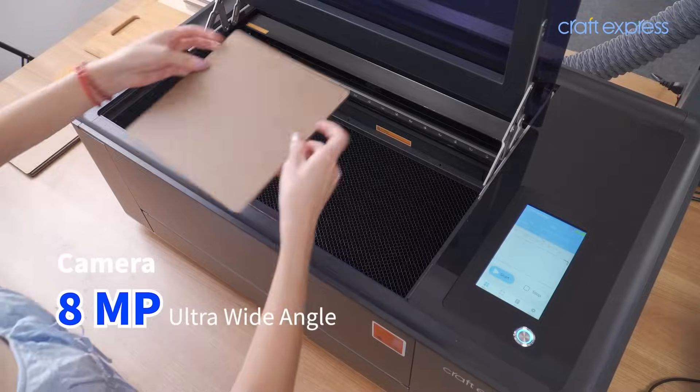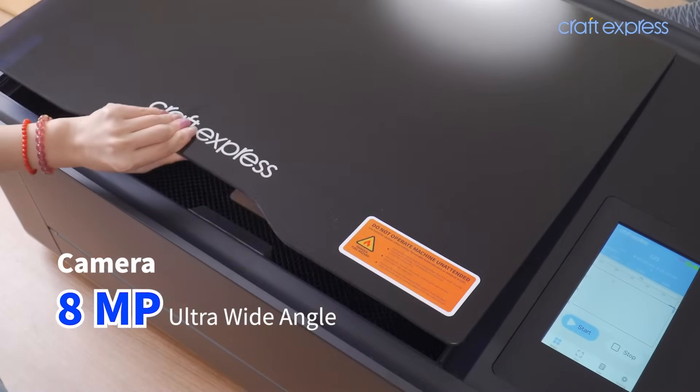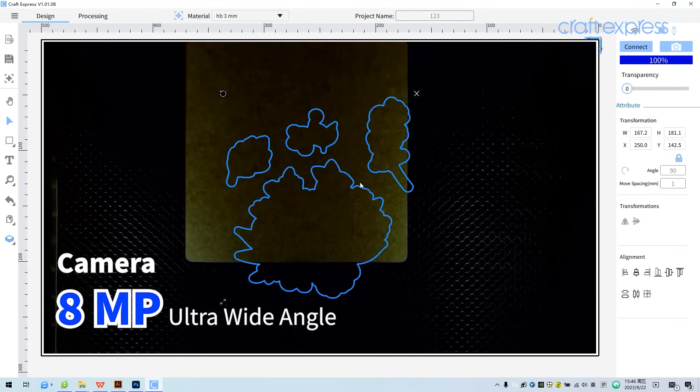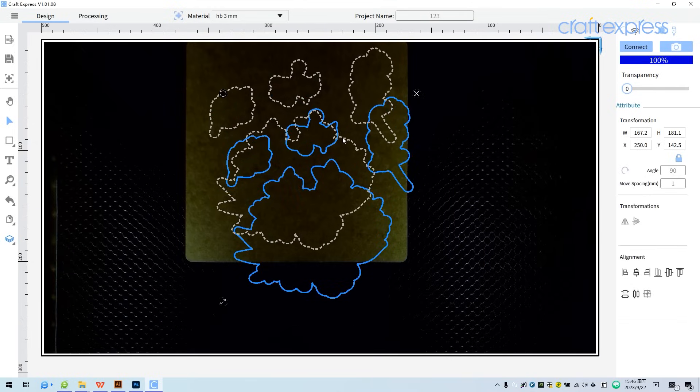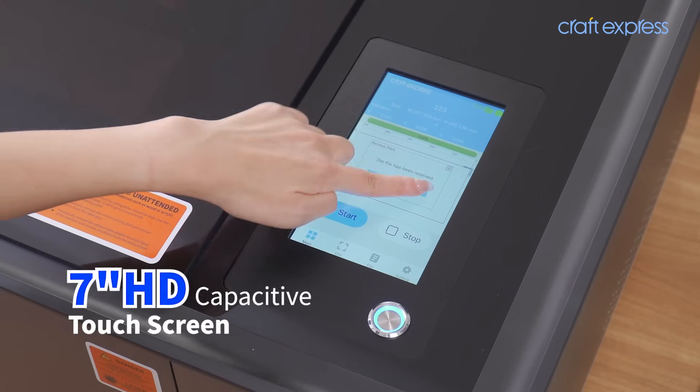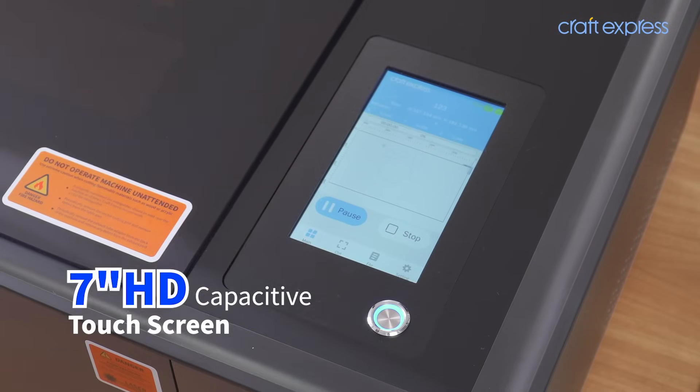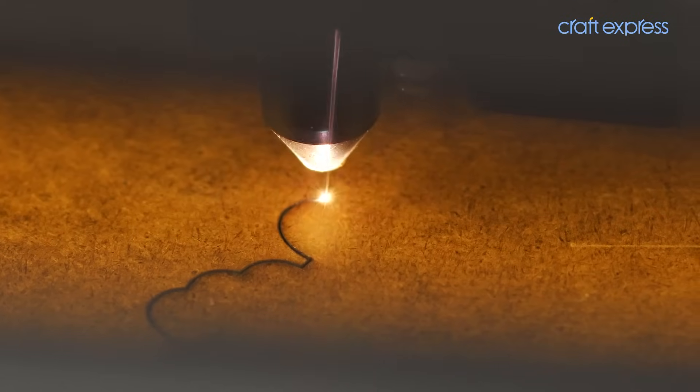The 8-megapixel ultra-wide-angle built-in camera is perfect for real-time monitoring of material location. The 7-inch HD capacitive touchscreen and easy program help you control the machine easily.